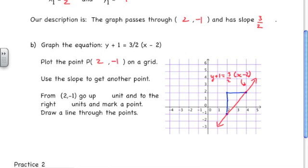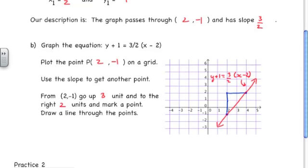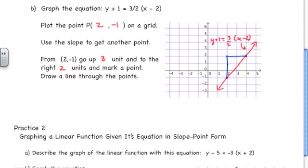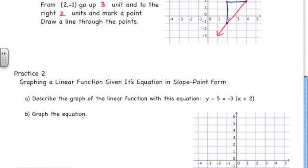To finish off the notes: from the point (2, negative 1), go up 3 units and to the right 2 units, mark a point, and draw a line through the two points. There is a practice example here, so pause the video.